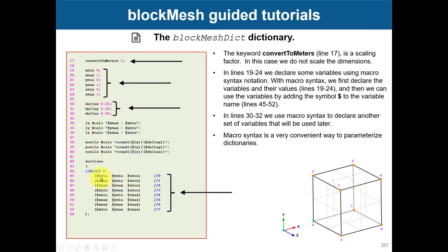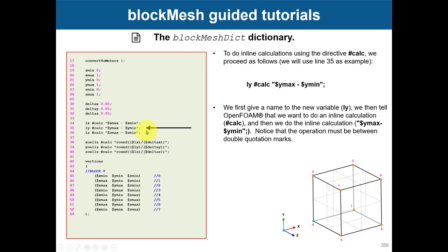Here you give the coordinates defining your domain. What you see here is called an inline calculation. By using the pound or hashtag symbol, you can do inline operations — to automatically compute the number of cells. You define a delta X and a spacing in X, Y, or Z, and automatically it computes the number of cells you need. This is parametric — it doesn't matter the dimensions of your domain. You just put them here, give a spacing, and everything will be computed automatically.